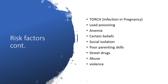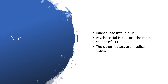Other risk factors include TORCH infections during pregnancy, blood poisoning, anemia, certain religious or cultural beliefs dictating what the child is fed, social isolation, poor parenting skills, street drug use by parents, abuse at home, spousal abuse, and intimate partner violence — with the child facing the consequences.